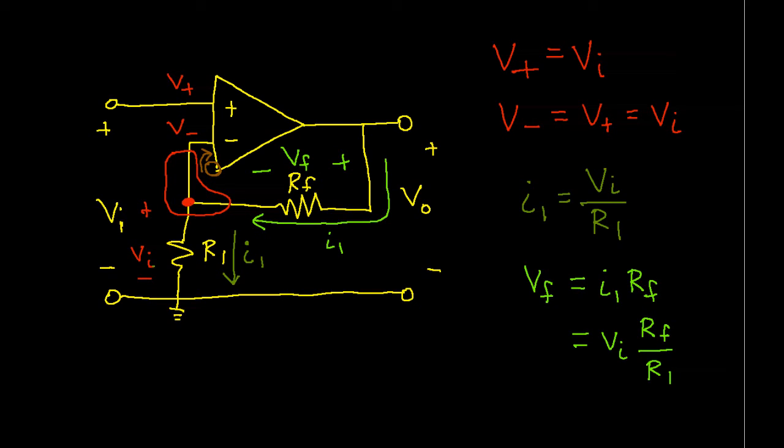So we're almost done. The voltage across the output, V0, if you look at the way V0 is set up, it's the voltage across RF plus the voltage across R1. We know that the voltage across RF is VI RF over R1, and the voltage across R1 is VI. Now we can factor out a VI, and we get VI times 1 plus RF over R1. That basically gives us the output voltage of this non-inverting op-amp circuit in terms of RF and R1.